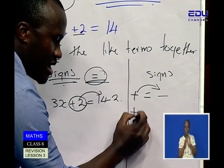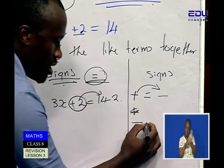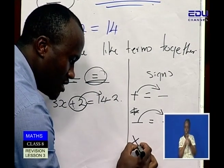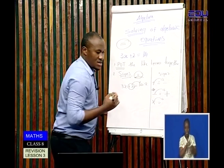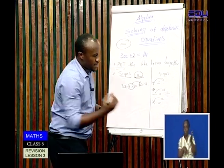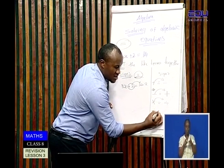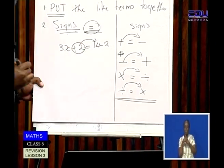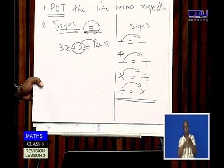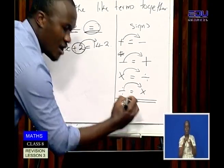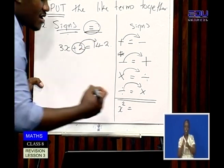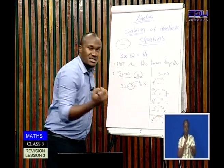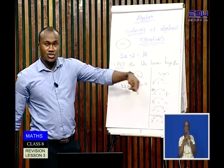If it is a subtraction and goes to the other side of the equals, it becomes an addition. If it is a multiplication on this side, when it goes to the other side, it is going to be a division. If it is a division on this side, goes to the other side, it becomes a multiplication. Are we together? Now, what about a square? If it is a square on this side and goes to the other side, it is going to be square root. So when it goes from one side to the other, it must change: addition becomes subtraction on the other end.